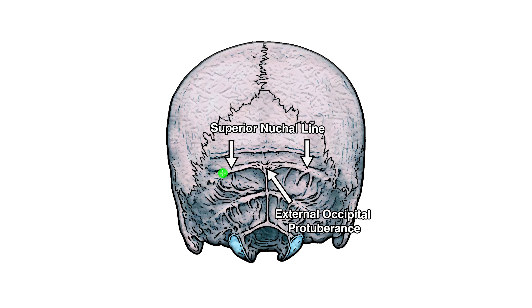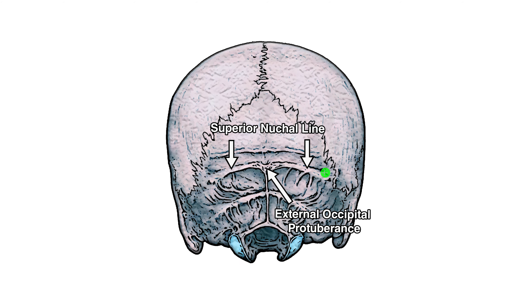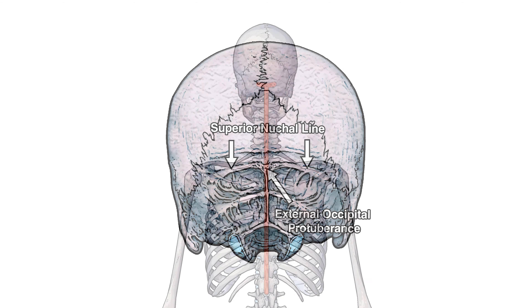Either side of the occipital protuberance you've got the superior nuchal line, and that's where the trapezius muscle also originates from. So in summary, the origin runs from T12 all the way to C7, across the nuchal ligament, the occipital protuberance of the skull, and then either side of that occipital protuberance on the superior nuchal line.